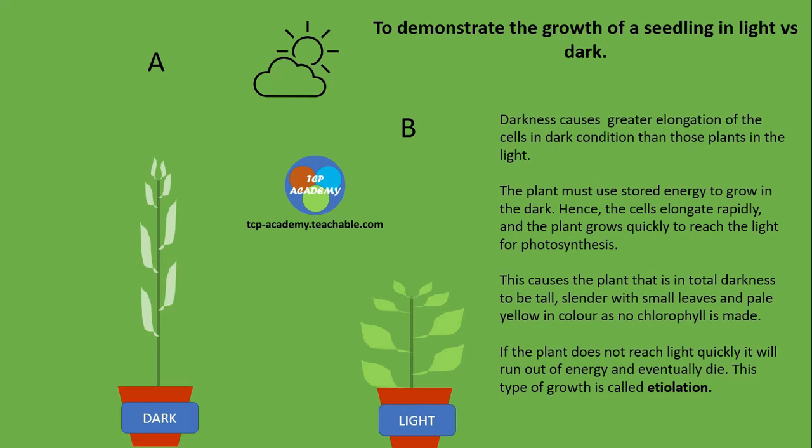This causes the plant in total darkness to be tall, slender, and with small leaves. It's also important to note that the plant will have a pale yellow color as a result of not having chlorophyll. If a plant does not reach light, it will run out of energy and eventually die. This type of growth in plants is referred to as etiolation.